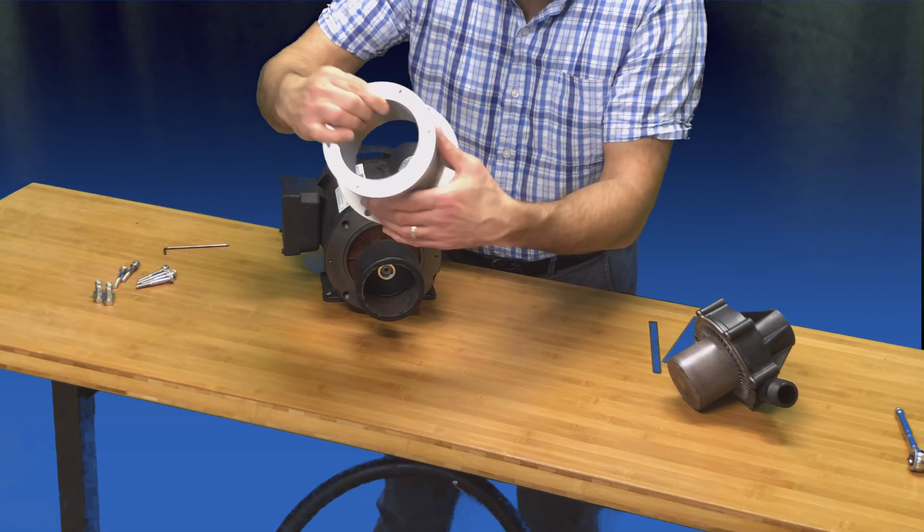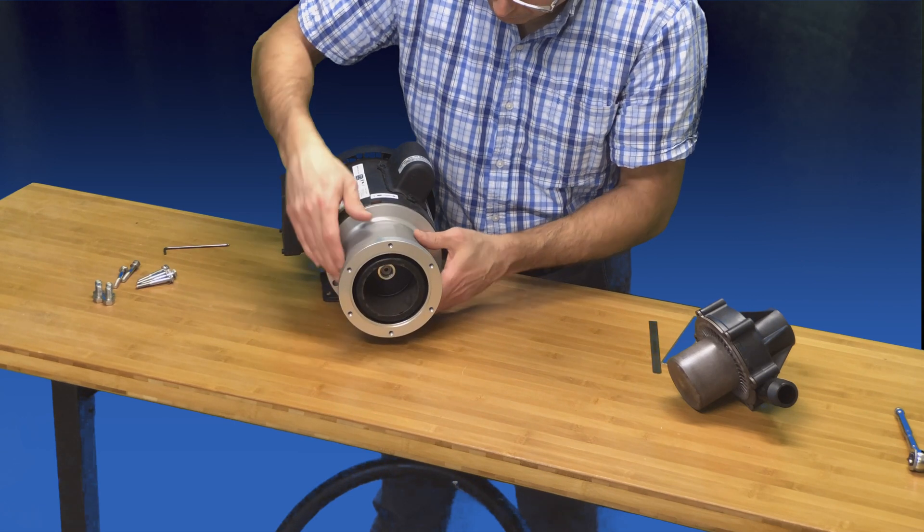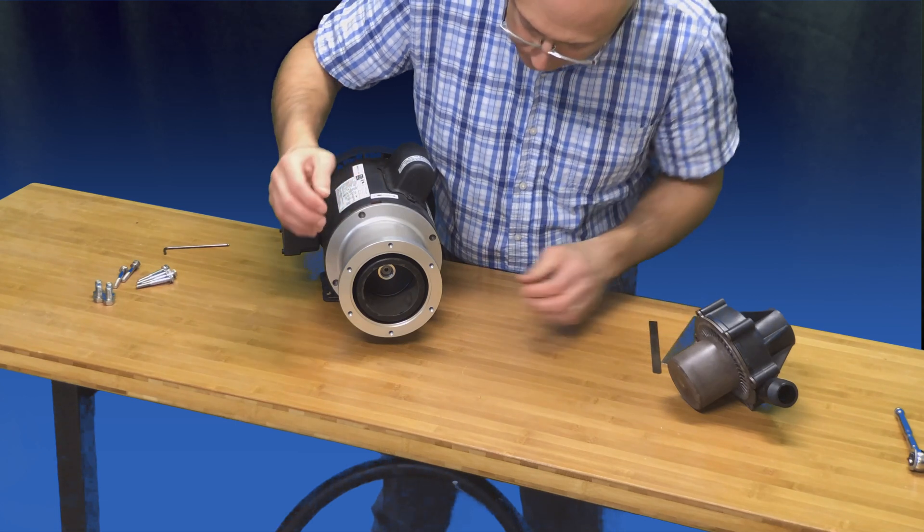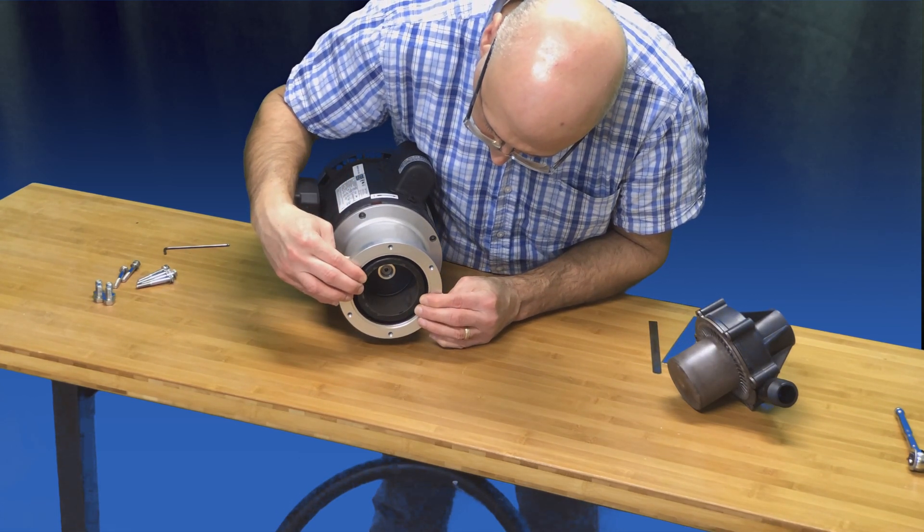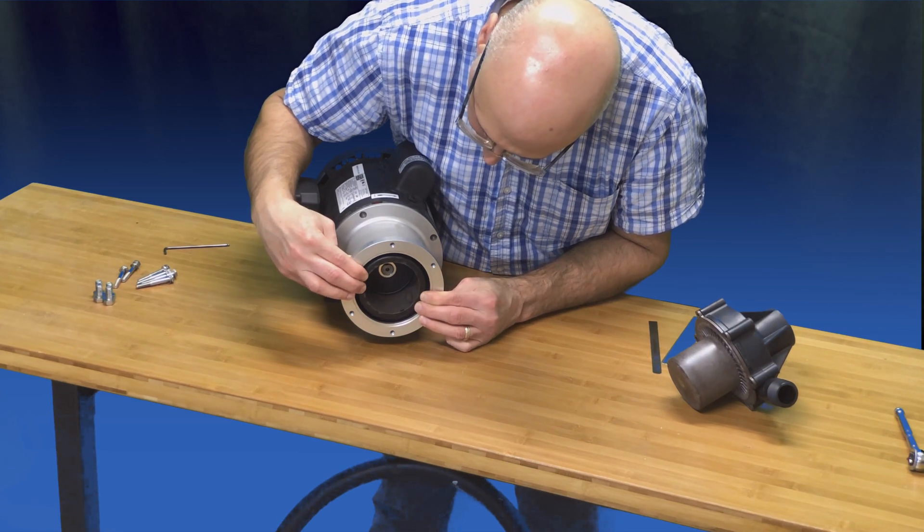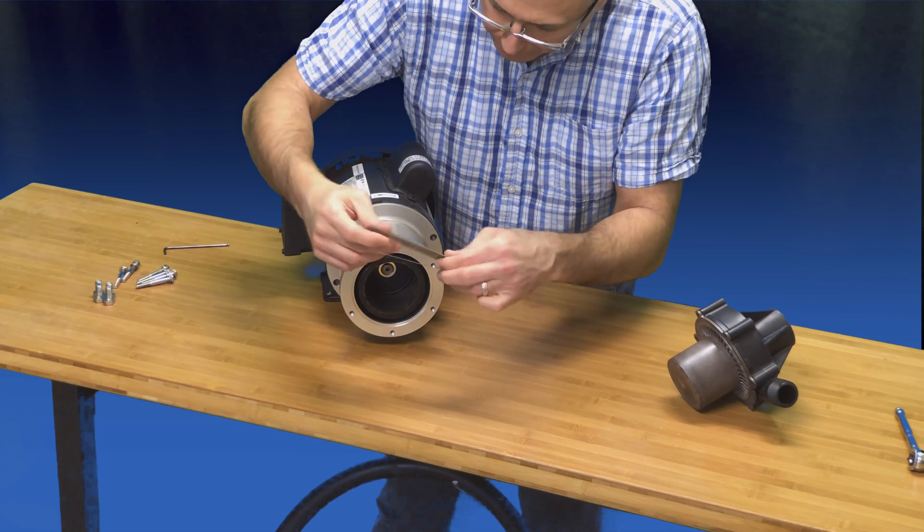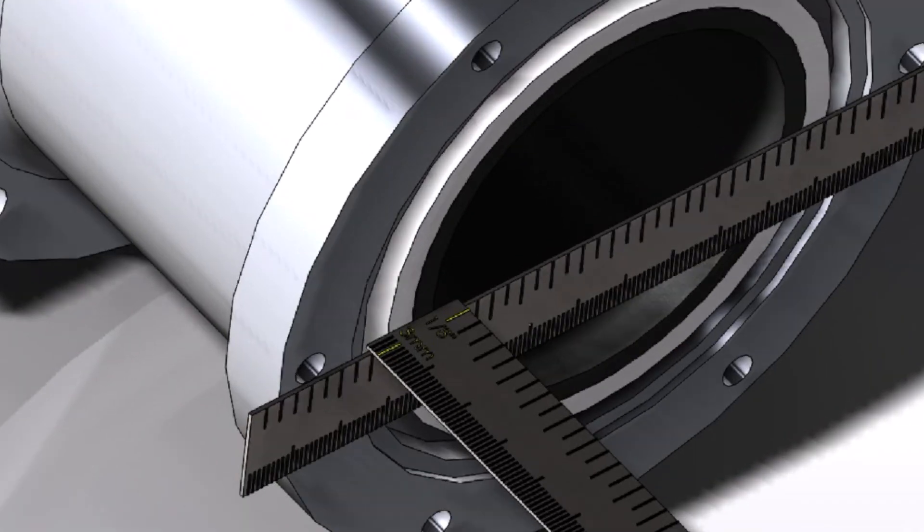Next, seat the motor bracket against the face of the motor. Then push the drive magnet assembly in so that its face is slightly below the front face of the motor bracket. Now take the two straight edges and use them to help position the drive magnet assembly one-eighth inch below the front face of the motor bracket.